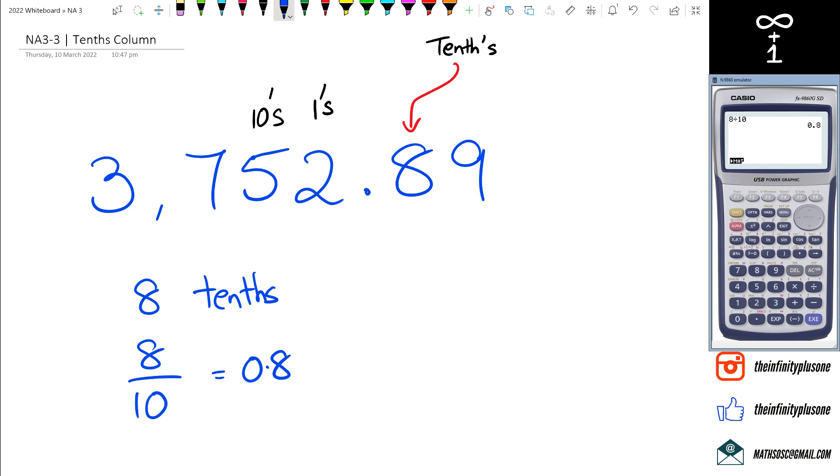So it just ends up being the tenth, and of course after the tenth you've got the one hundredth column, and so on.